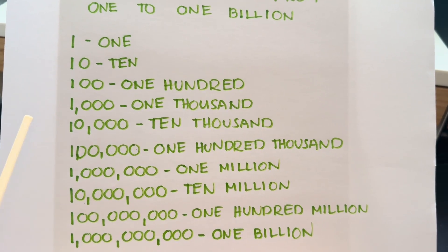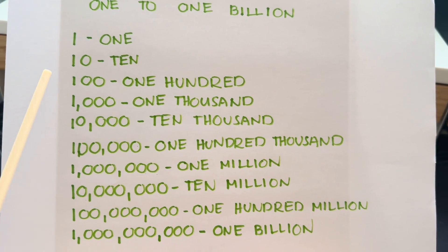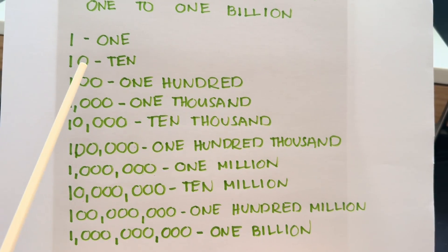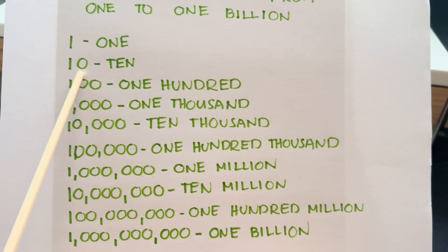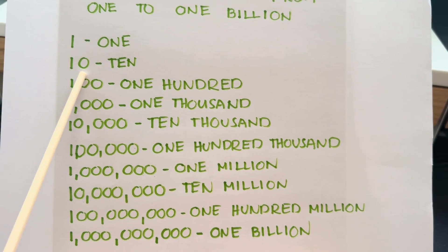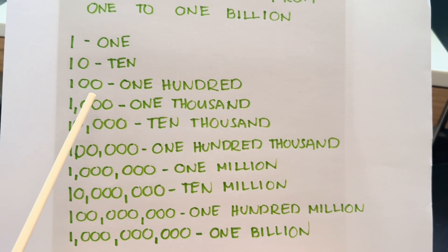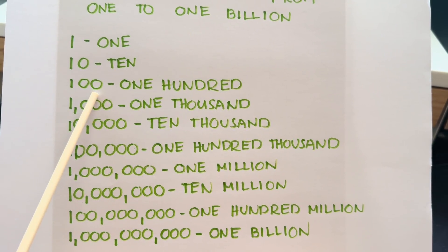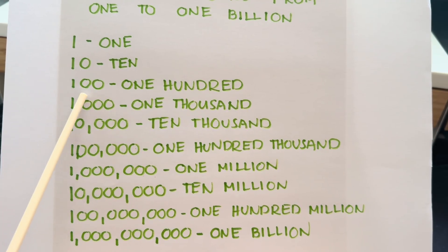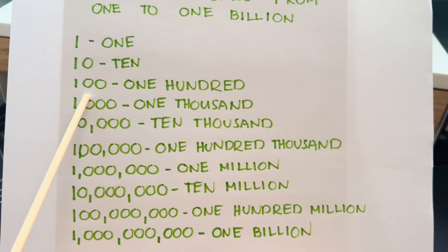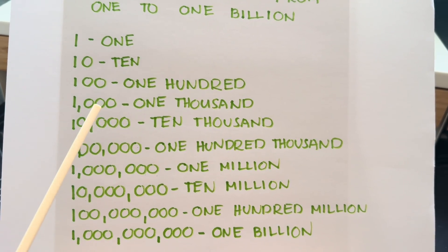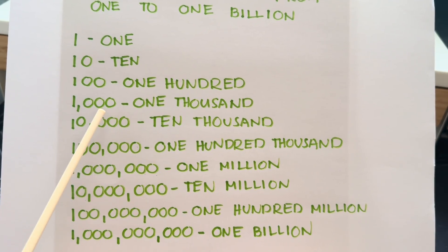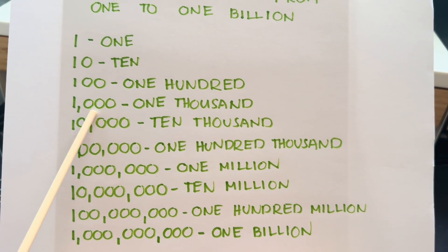How about let's try to count the zeros of the following numbers. In 10, we have 1 zero. In 100, we have 2 zeros. Next, there are 3 zeros in 1,000.